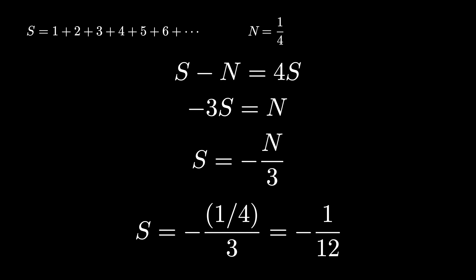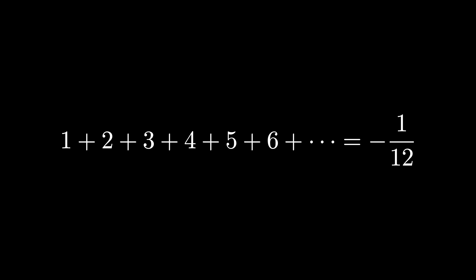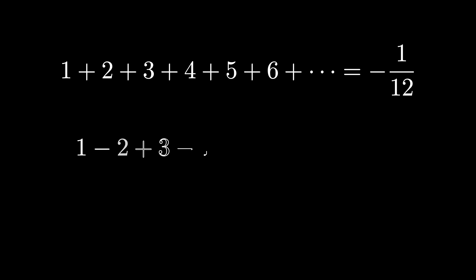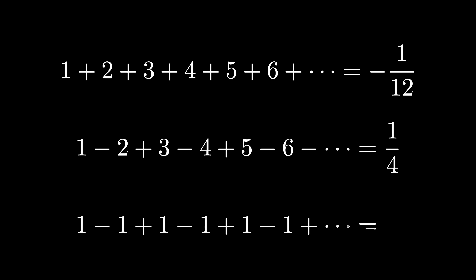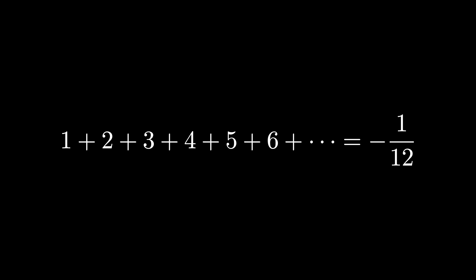So we've used a variety of visual arguments to conclude that the infinite sum of positive integers is negative 1 twelfth. Along the way we assigned the value 1 fourth to the alternating sum of positive integers, and to do that we needed the value of 1 minus 1 plus 1 minus 1 and so on to be 1 half, using the technique of Abel summation. While this result may not follow from standard real analysis techniques, we have seen one way to use visual arguments to arrive at this proposed result.